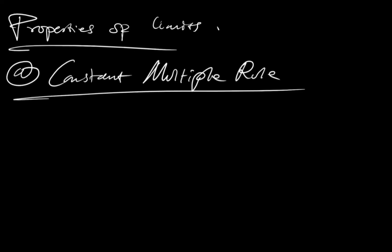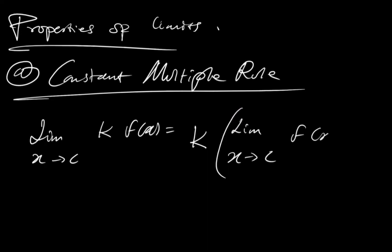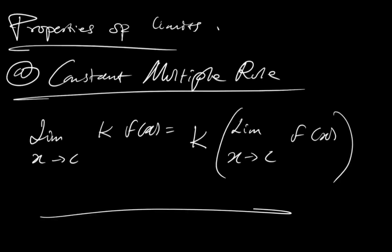So for this one, this is how it works. Given that you have a limit, say lim as X approaches C of the constant K times the function F of X, this can also be written as K pulled out, then you determine the limit of that particular function F of X. So this is basically the constant multiple rule. You can always pull out the constant you have and check the limit of the function.